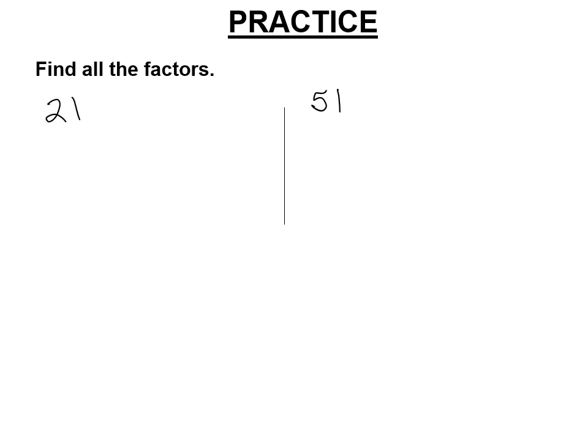All right, we're already practicing. So I'll find all the factors. Well, there's 1 and 21. There's no way there's 2 there, but 3 definitely goes into 21. 3 times 7 is 21. 4 doesn't work. 5, it doesn't end in a 0 or 5. 6. 21 is not on the 6 times table, and so that's it.